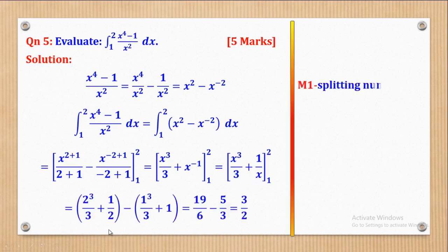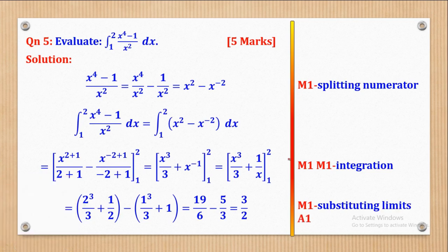Now we substitute the limits. We first put in the upper limit of 2 to get one bracket, then the lower limit of 1 to get the second bracket. Simplifying the first bracket gives 19/6, and simplifying the second bracket gives 5/3. So 19/6 minus 5/3 gives 3/2, and that is the value of the required integral.